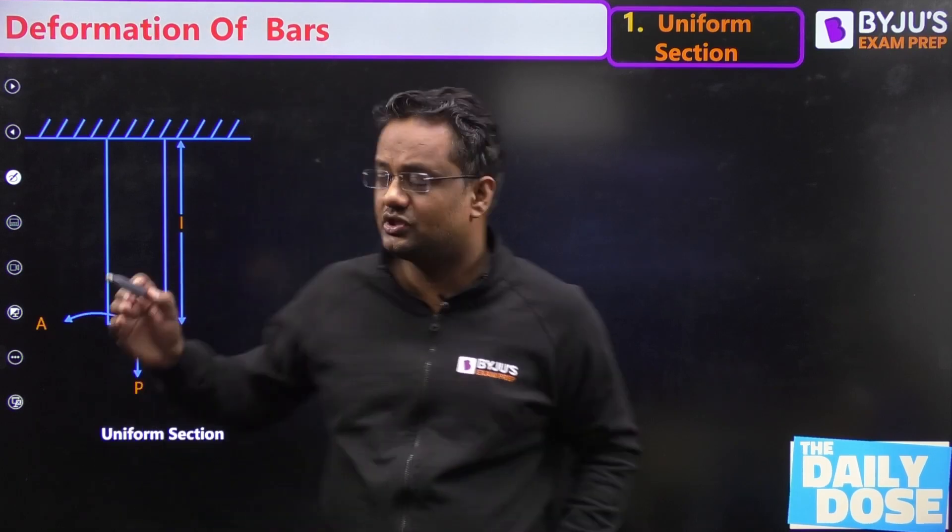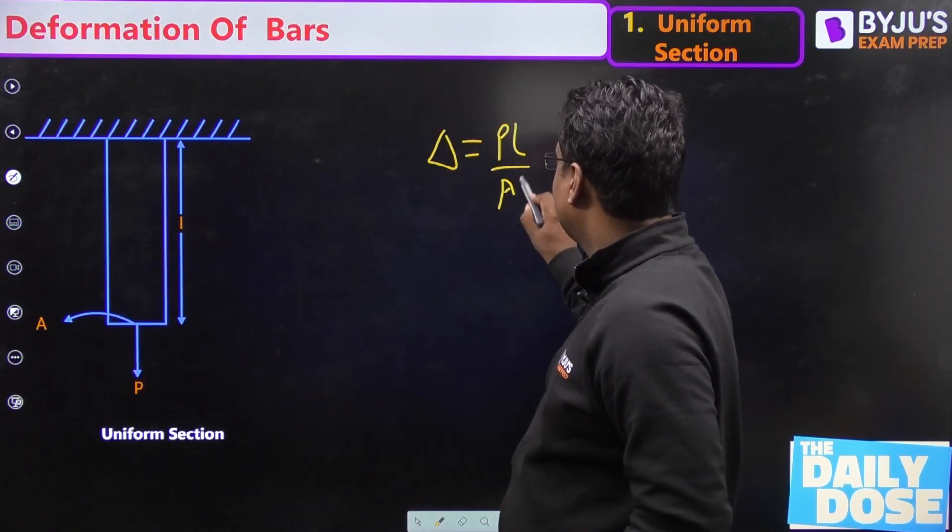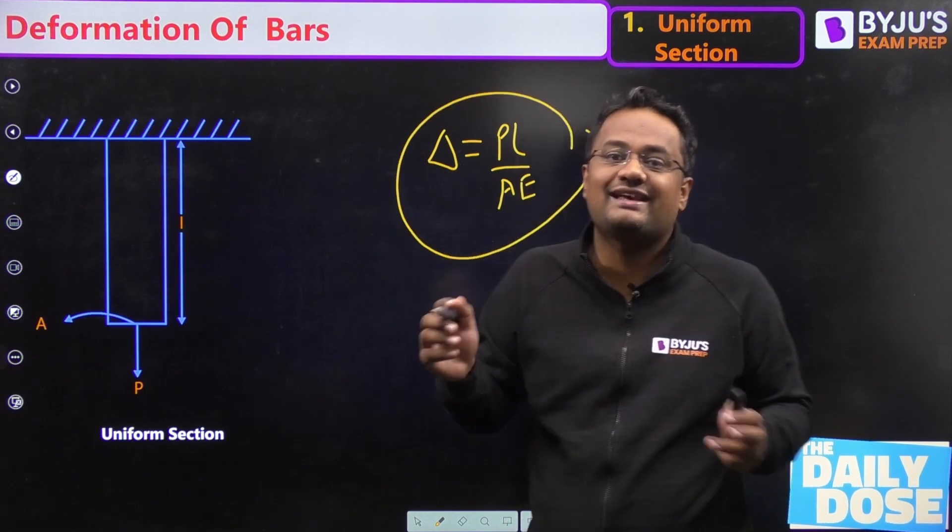I hope you all know the deformation of this kind of bar is delta equals PL by AE, but this formula can be applied only for those sections where area is constant.